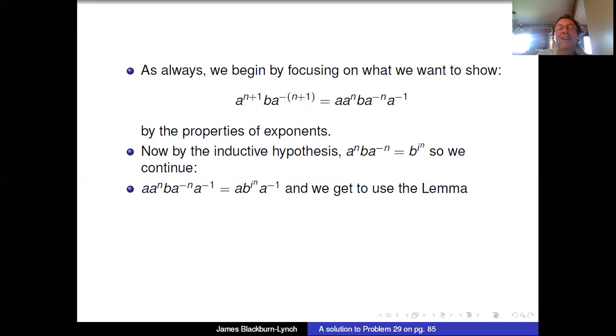So if you look at our top line, we've replaced a^n ba^(-n) with b^(in), and so we have a times b^(in) times a^(-1), which is why we needed to prove the lemma. We needed to prove the lemma because now we have the a on the left and the a on the right, but the thing inside is not b. The thing inside is b to some crazy power. Now I proved by induction that for b to any power we have this nice rule where you take b to that power and multiply by i.